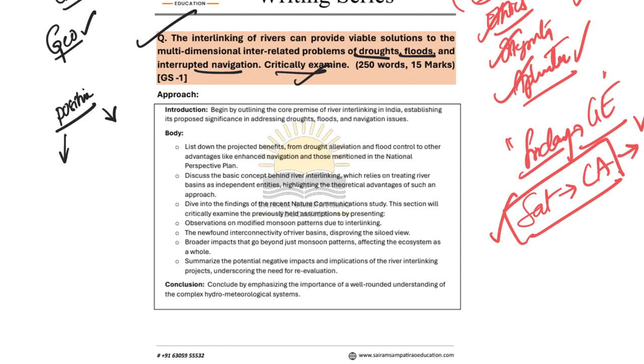For interlinking of rivers, you need to talk about what challenges we are going to face after doing the interlinking. We need to take the positive side as well as the negative side and come to a balanced conclusion.